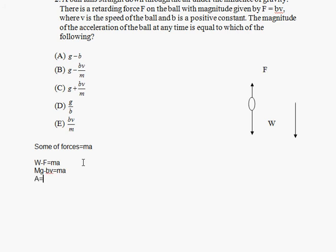Therefore, A equals Mg minus BV divided by m, which is equal to Mg divided by m minus BV divided by m, which equals g minus BV divided by m. And that's choice B.